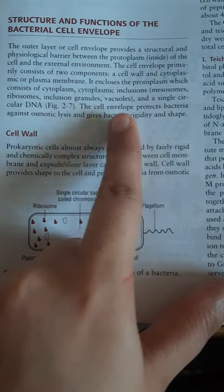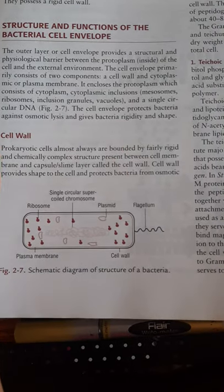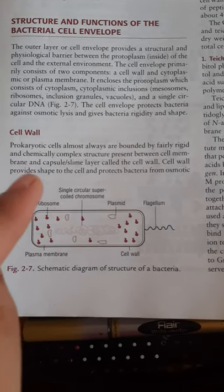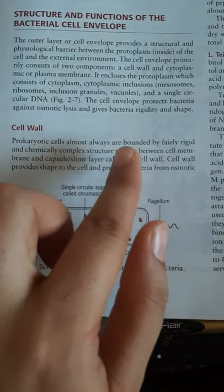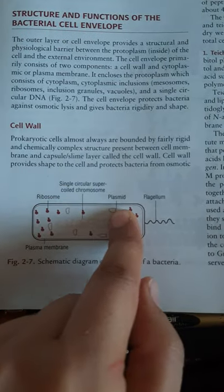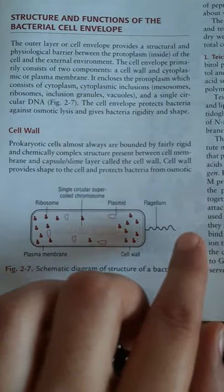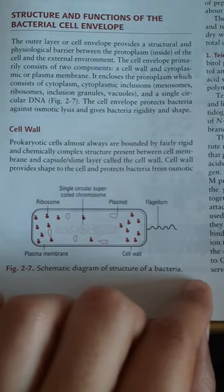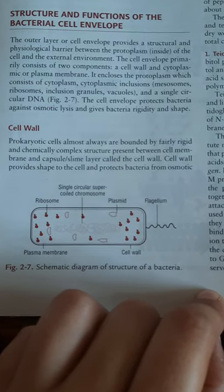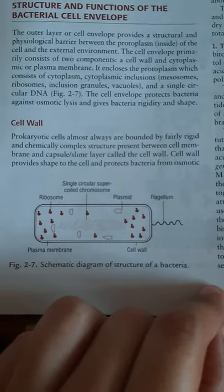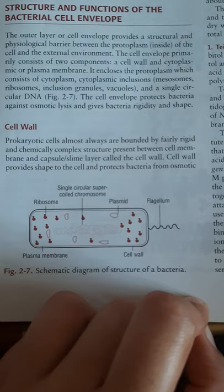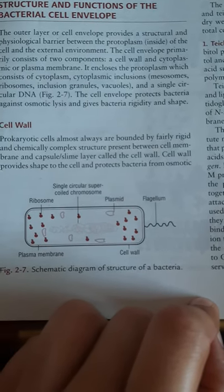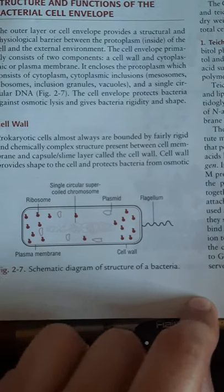The cell envelope is composed of two components: one is cell wall and the other is cytoplasmic or plasma membrane. The cell wall is basically responsible for the bacterial cell shape and protects against osmotic changes. The bacterial cell measures internal osmotic pressure of 5 to 20 atmospheres.